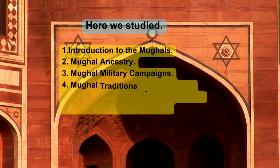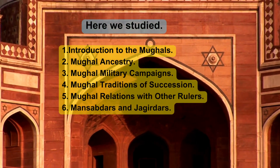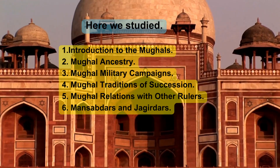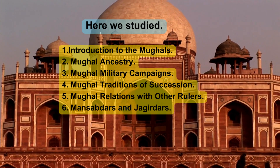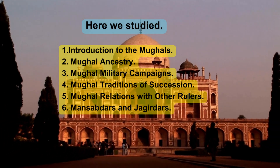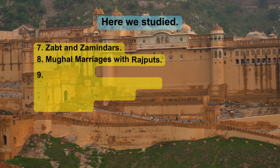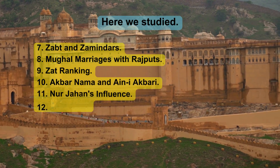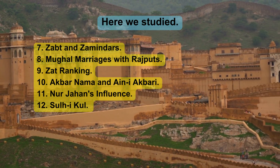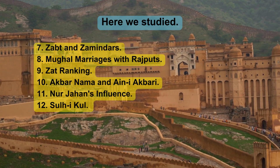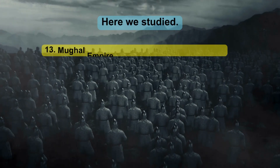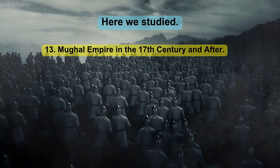So, here we studied: 1. Introduction to the Mughals, 2. Mughal Ancestry, 3. Mughal Military Campaigns, 4. Mughal Traditions of Succession, 5. Mughal Relations with Other Rulers, 6. Mansabdars and Jagirdars, 7. Zabt and Zamindars, 8. Mughal Marriages with Rajput, 9. Zat Ranking, 10. Akbar Nama and Ain-i-Akbari, 11. Noor Jahan's Influence, 12. Sulh-i-Kul, and at last, 13. Mughal Empire in the 17th century and after.